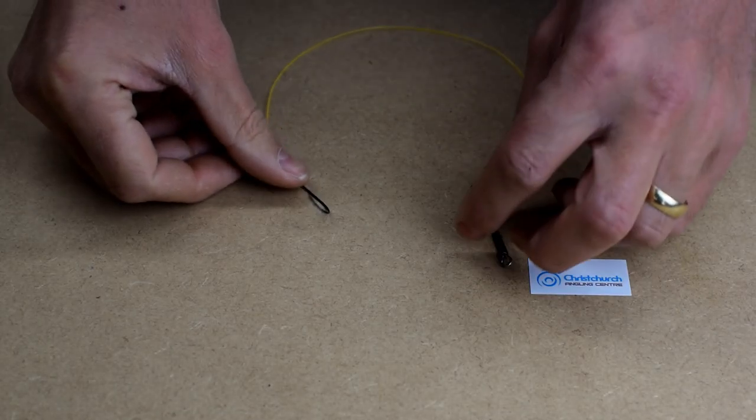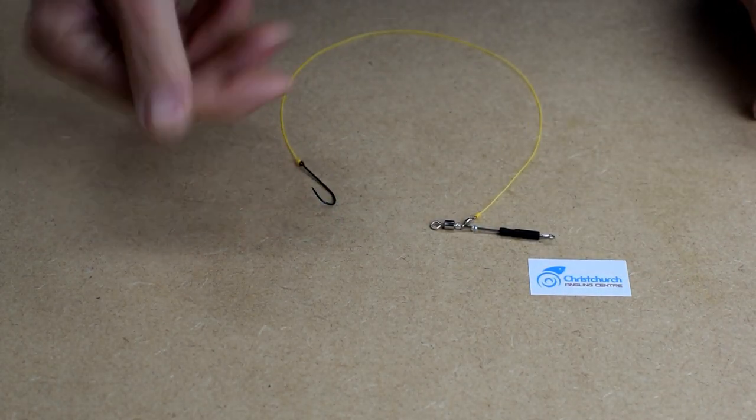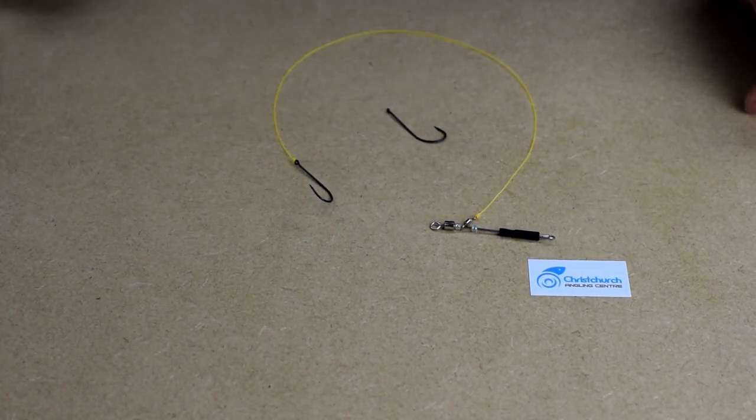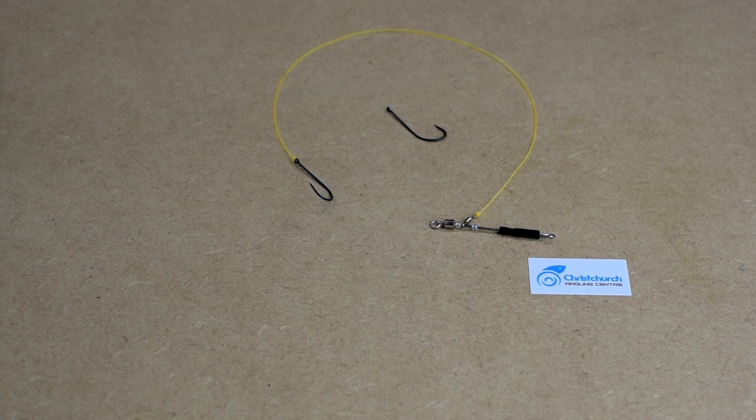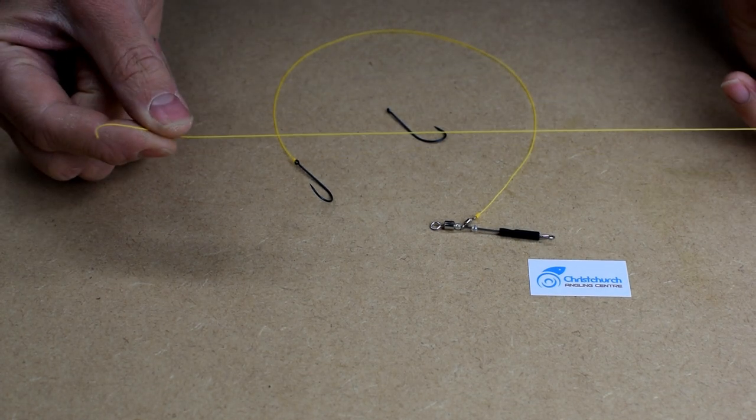Right. Now we're going to add a second hook to our little earth rig we've just tied. So at the moment we have a one below, we're going to make it into a two below. First things first, cut yourself off about a foot of line.